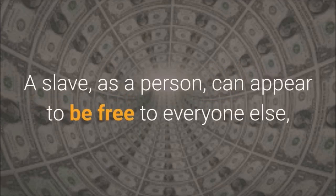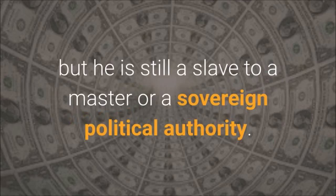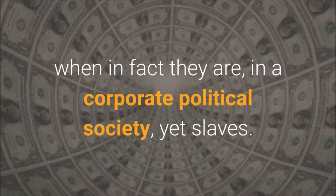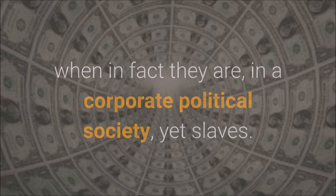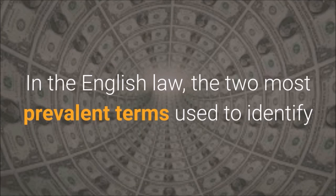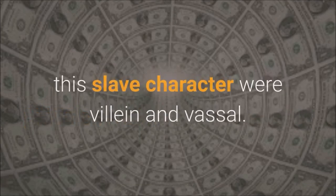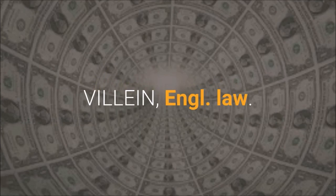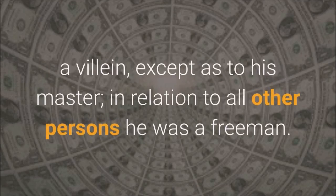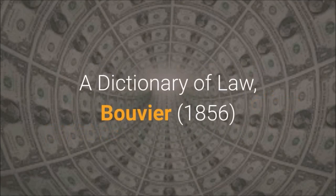A slave, as a person, can appear to be free to everyone else, but he is still a slave to a master or a sovereign political authority. This is the character that can fool most people into believing they are free, when in fact they are, in a corporate political society, yet slaves. In the Roman civil law the term freedman is most often used to describe a slave of this character. In the English law, the two most prevalent terms used to identify this slave character were villain and vassal. Villain — English Law: A species of slave during the feudal times, for no person was, in the eye of the law, a villain, except as to his master; in relation to all other persons he was a freeman. A Dictionary of Law, Bouvier, 1856.